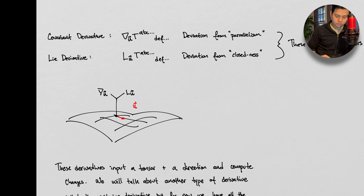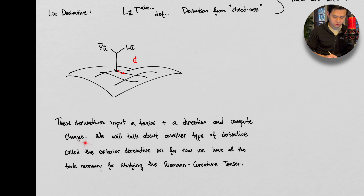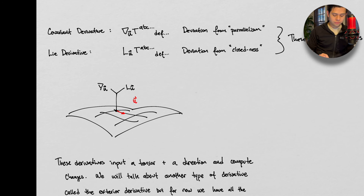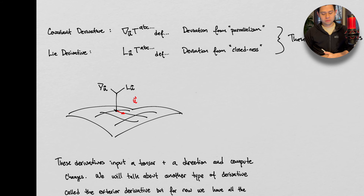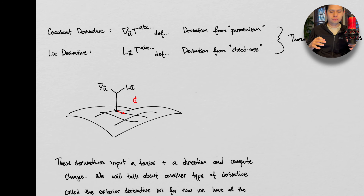To recap, we have the picture again: we have direction u, and we can take a covariant derivative in that direction or take the Lie derivative in that direction. These derivatives input a tensor plus a direction and compute changes. We're going to talk about another type of derivative called the exterior derivative, but for now we have all the tools necessary to start studying the Riemann curvature tensor. This is the last video before we get into curvature — the Riemann stuff.